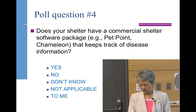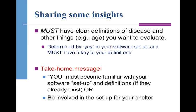I just want to re-emphasize: if you don't have a commercial software package, you can still do this — this is not rocket science. Some insights though: garbage in, garbage out. If the data aren't of good quality, what you get back out you can't count on. You have to have clear definitions of what URI is. For people you're training who don't know what upper respiratory is, you need to give them some guidance. Things like age — kitten, juvenile, adult, or senior — what do those words mean? What's a kitten in shelter A compared to shelter B?